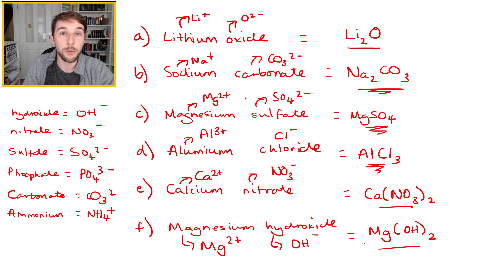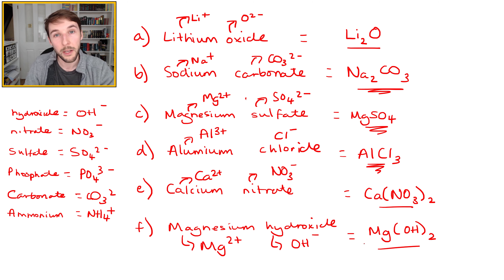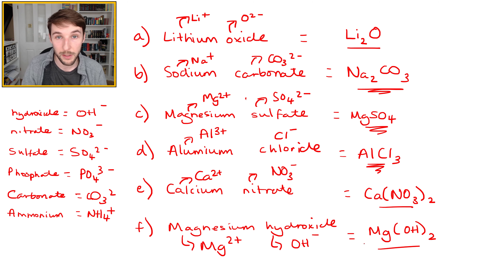So whenever you're given a word equation to convert to a balanced symbol equation, work out the formula of each compound first — whether it's a salt, an alkali, or an acid — to ensure you're balancing the correct formula, not a made-up one. In the next part, we'll give you reaction word equations to convert to balanced symbol equations yourselves.